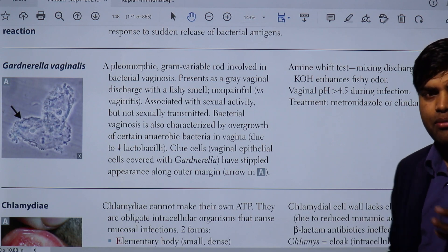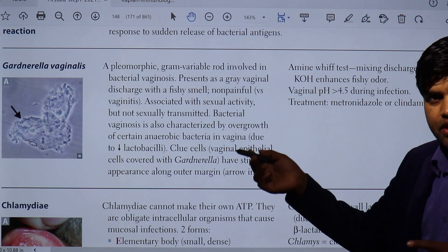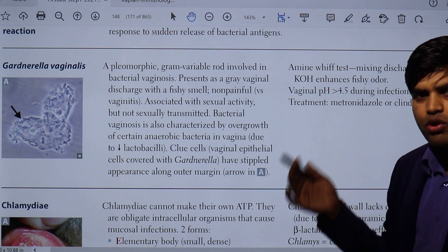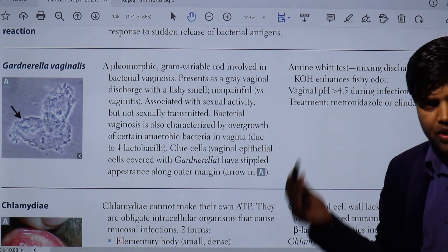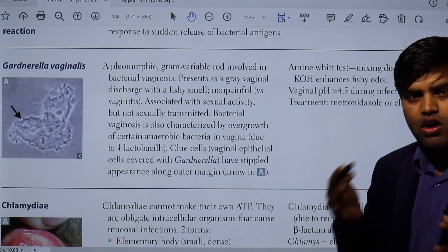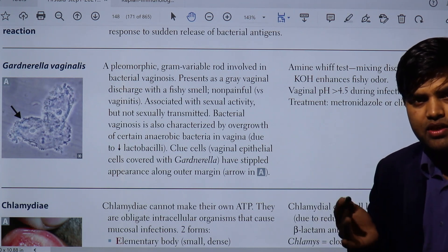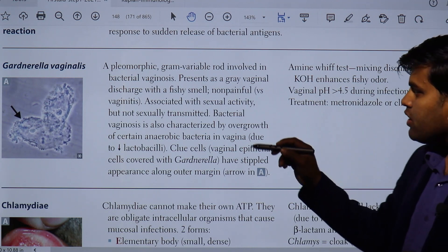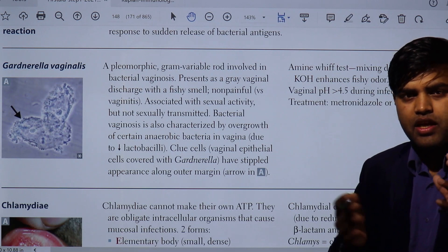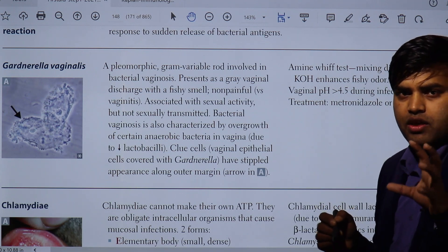Gardnerella vaginalis is one of the important bacteria causing bacterial vaginosis. This is the overgrowth of Gardnerella vaginalis in the vagina — the female genital tract — and they develop certain symptoms. The symptoms may be a gray discharge with a fecal/fishy smell. When you pick up a cell under microscopy, you see that the normal vaginal epithelial cell has been converted into a clue cell. The clue cell is a normal epithelial cell that has overgrowth of bacteria on it, giving a stipple — dotted — appearance.